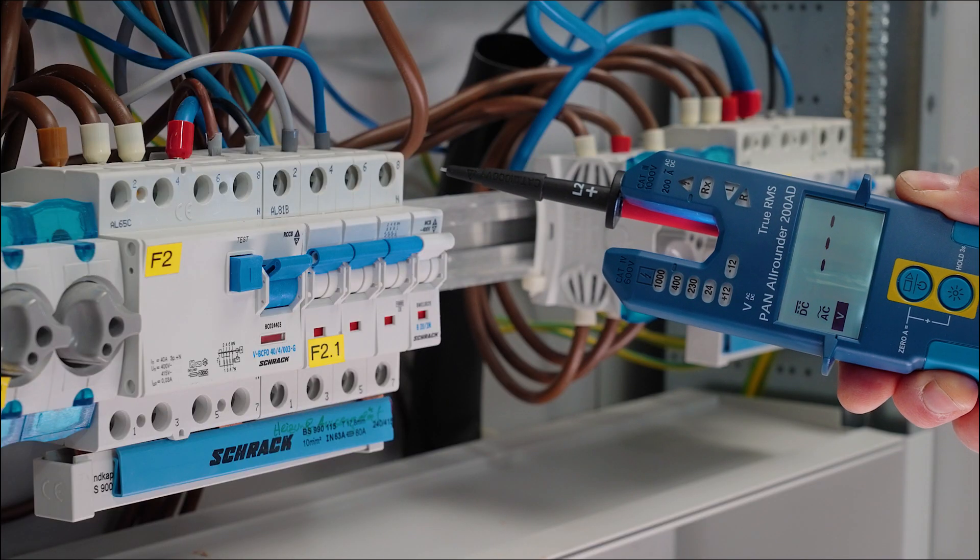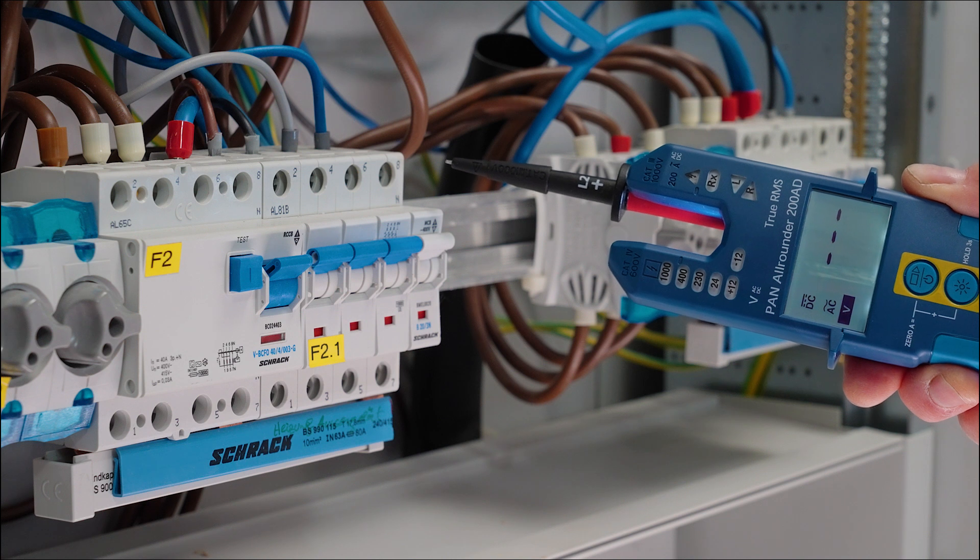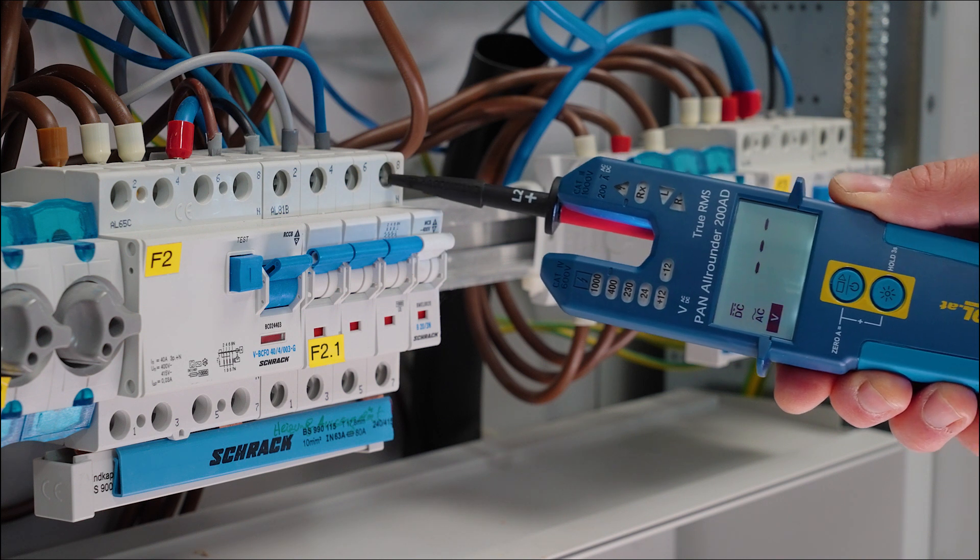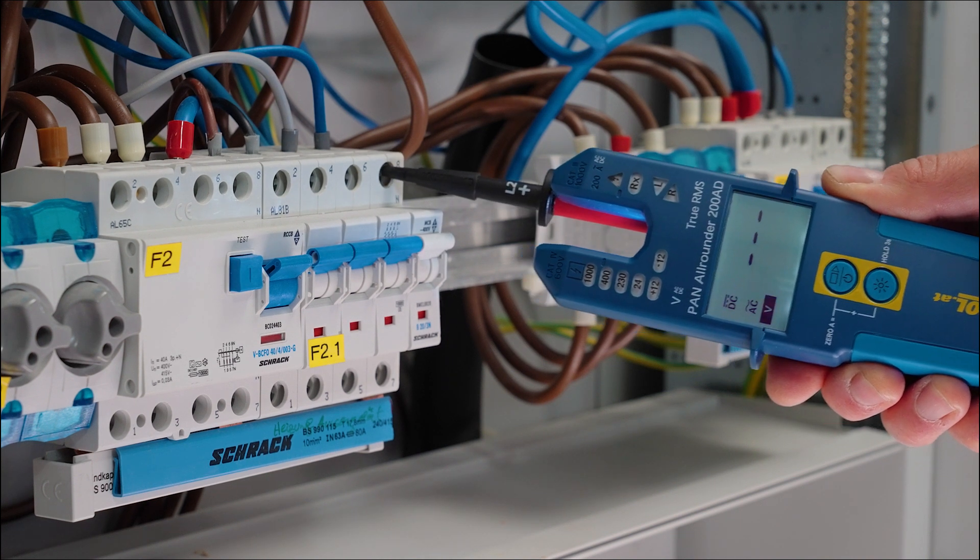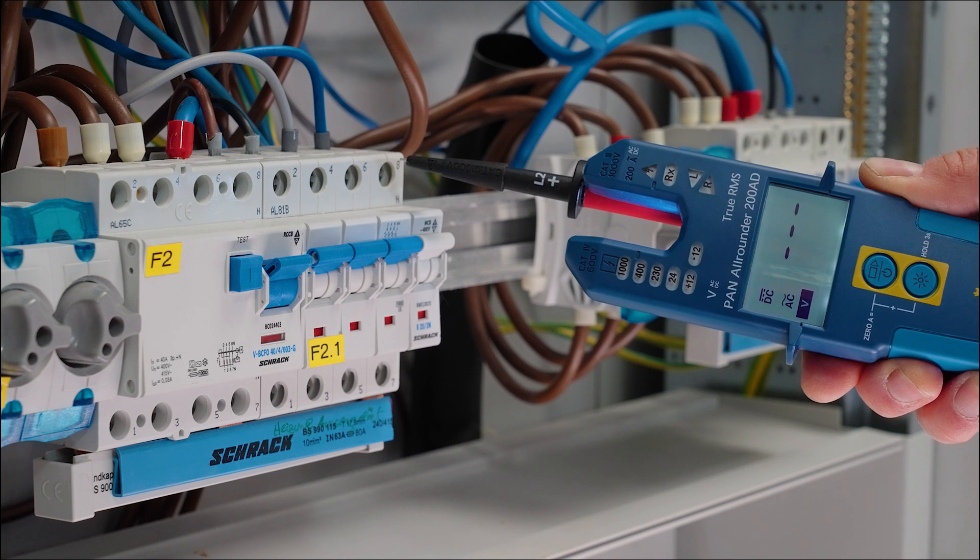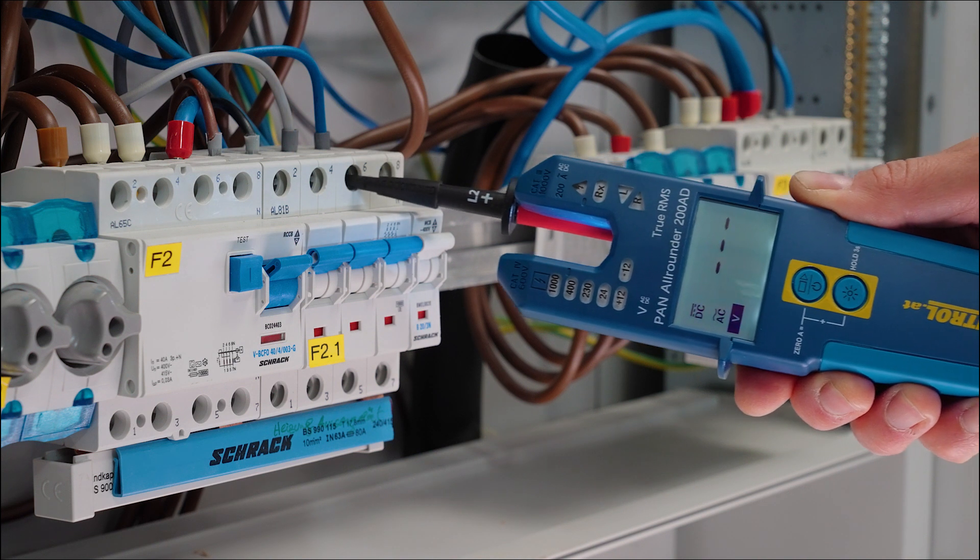With one single test tip, Pan Allrounder is a single pole phase tester. When touching the neutral, nothing happens. When touching a phase conductor, the device lights up, beeps and vibrates.